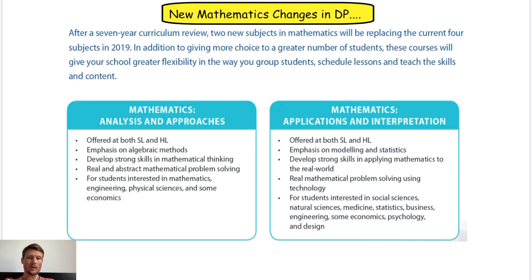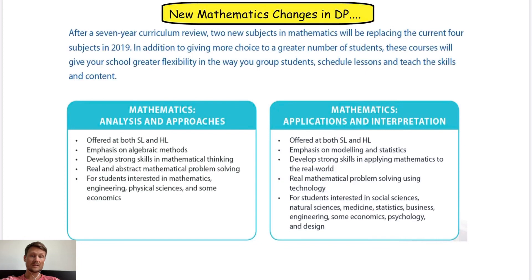Math AI is for students interested in social sciences, natural sciences like biology and medicine, and anything related to statistics, business, and engineering. If you want to do engineering at a high level, the Analysis and Approaches option would be preferable. The AI SL has a lot of comparisons to Math Studies; however, we've realized this year that the AI SL is slightly harder than Math Studies, so students who would normally choose Math Studies will now have to work extremely hard to get a good grade in AI SL.